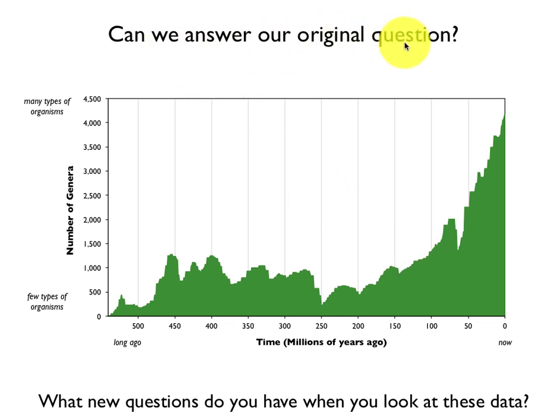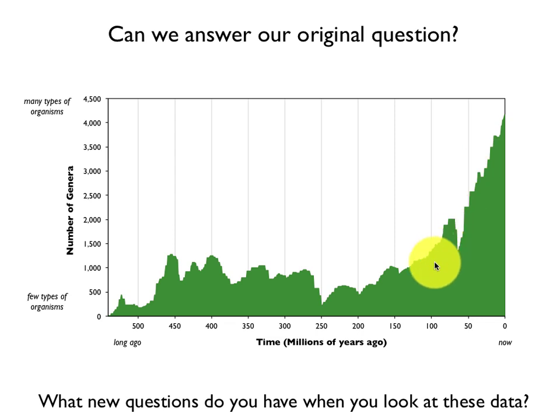Looking at our graph, can we answer our original question — were there more types of animals 120 million years ago compared to today? Well, yeah, we can. We can see that pretty clearly on the graph. But we also start seeing a lot of other things now that we have such a rich data set. What I do now is ask my students: what new questions do you have when you look at these data? I want them to write down as many new questions as they can so we can put them on our wall of wonder.